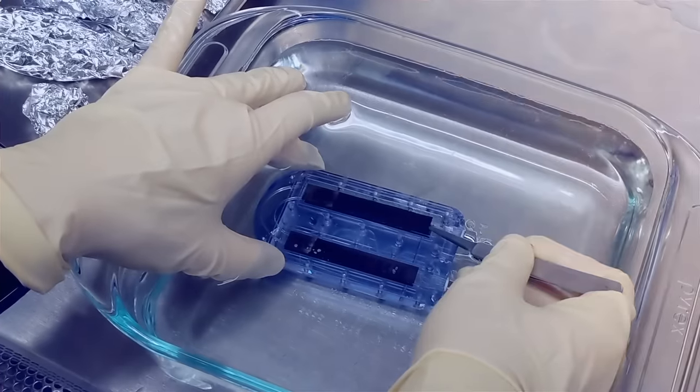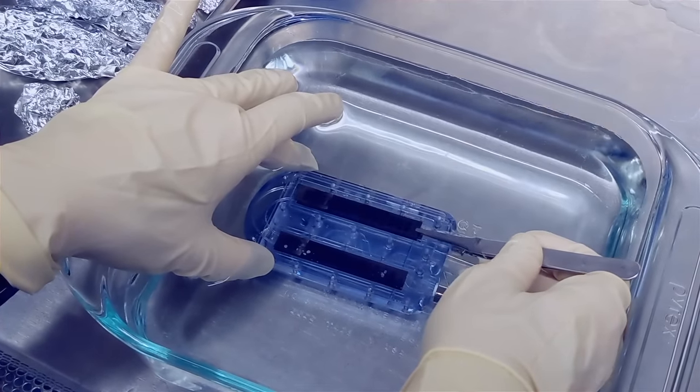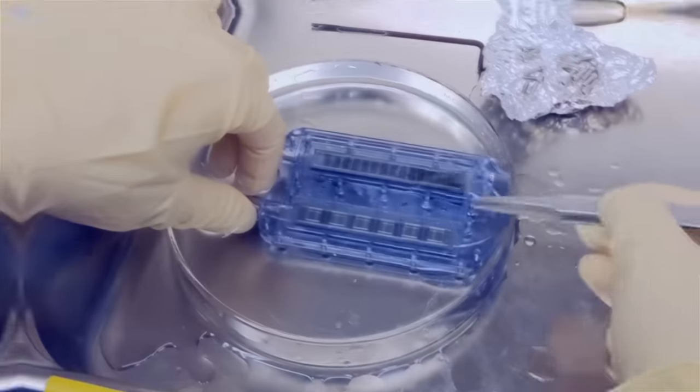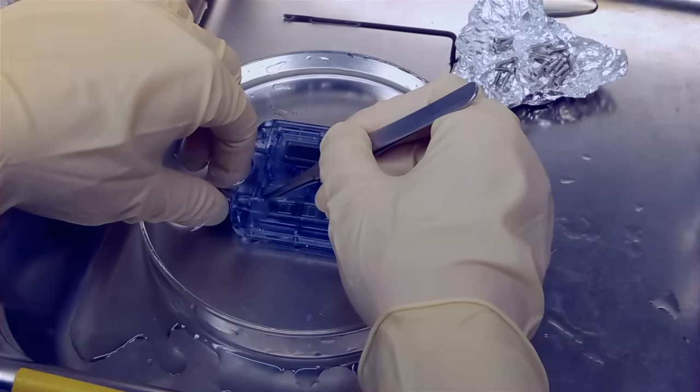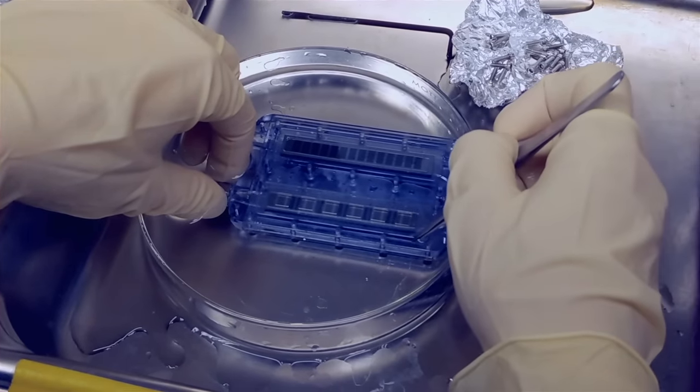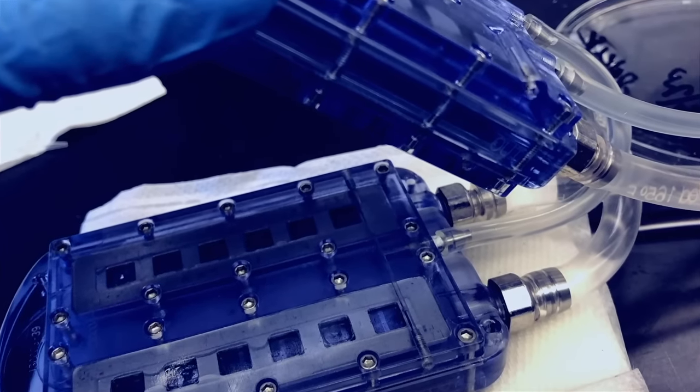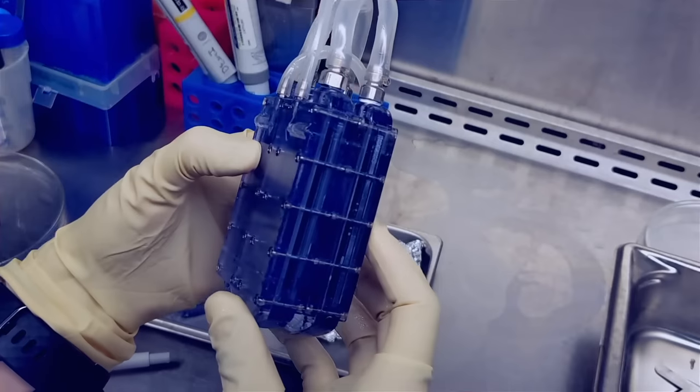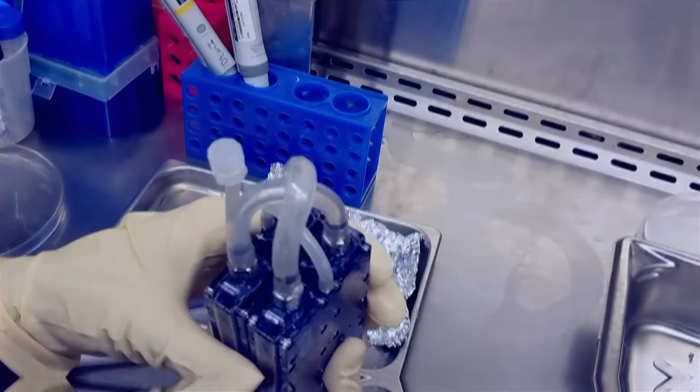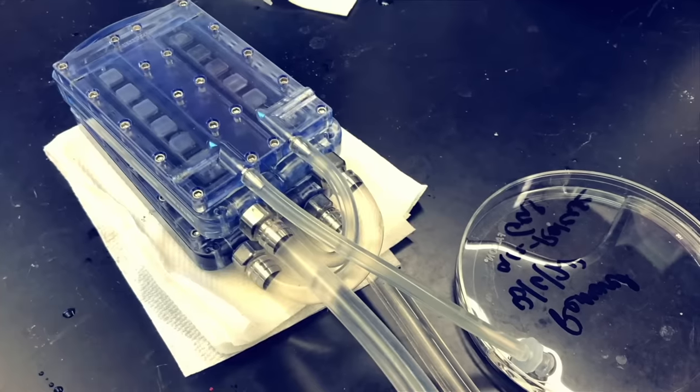The silicon membranes were mounted in polycarbonate housing to construct hemofilters and in similar fashion bioreactors were assembled to immunoprotect the renal tubule cells. The hemofilter and bioreactor components were then connected to create bioartificial kidney prototypes for benchtop and preclinical testing.